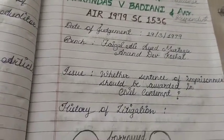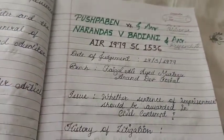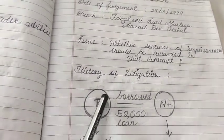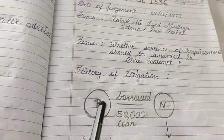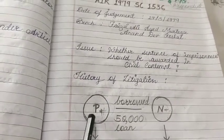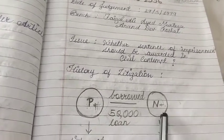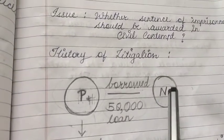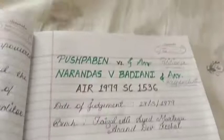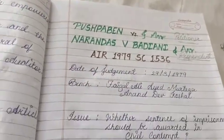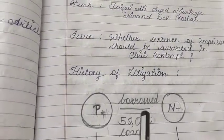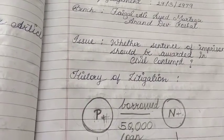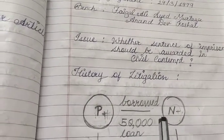Now let's look at the history of litigation — how this matter reached the Supreme Court. Here, Pushpa Ben and another party — Narendas V. Badyani — had a certain loan. They had taken a loan of Rs. 50,000 from him.